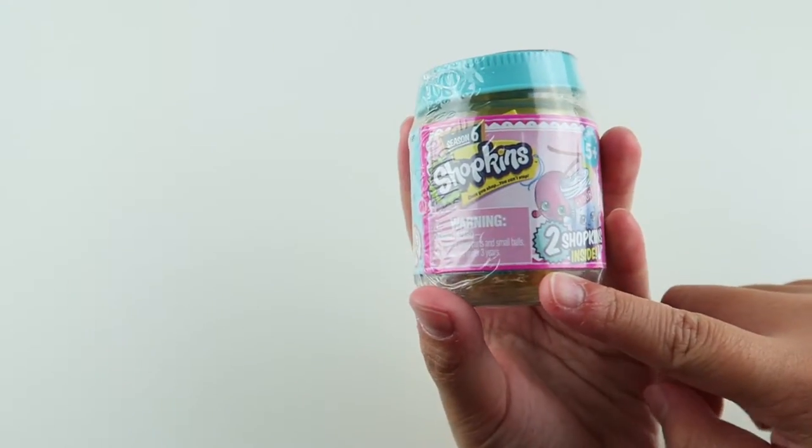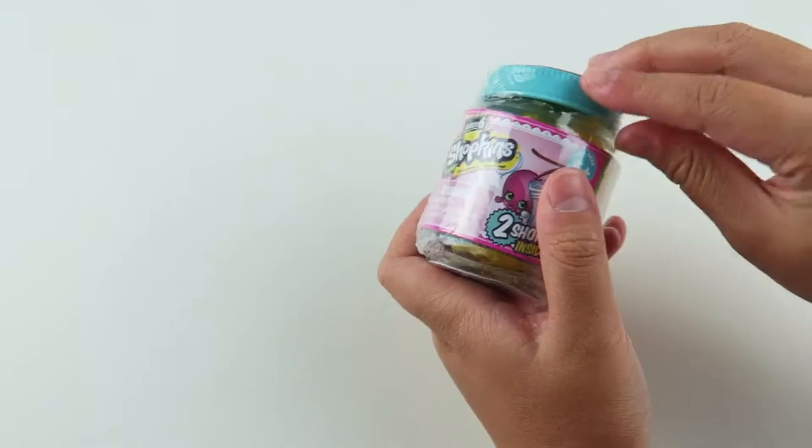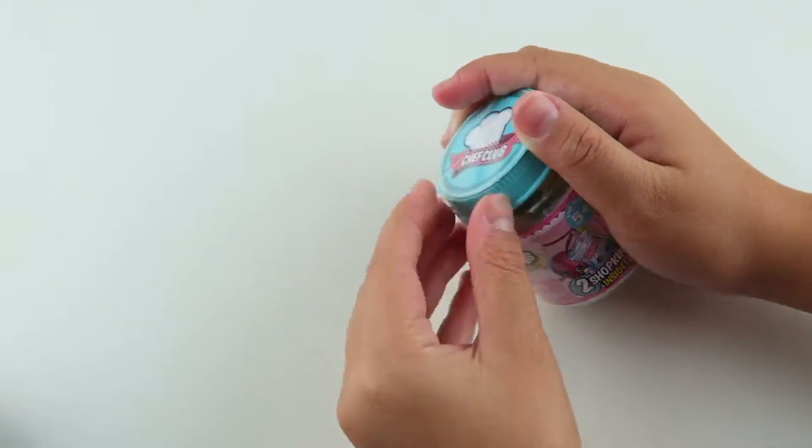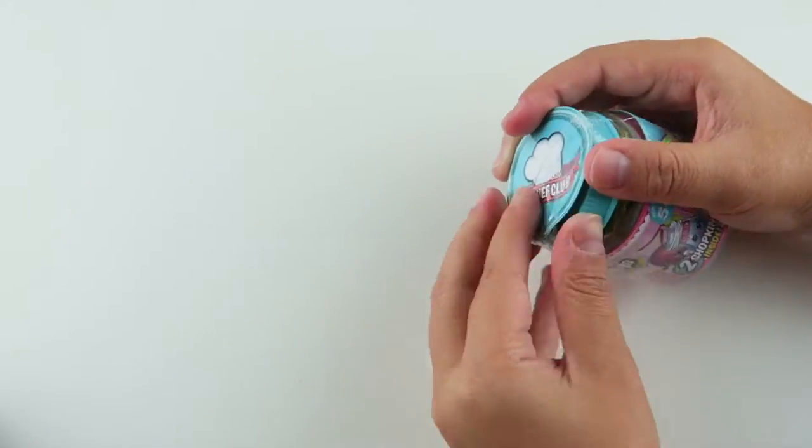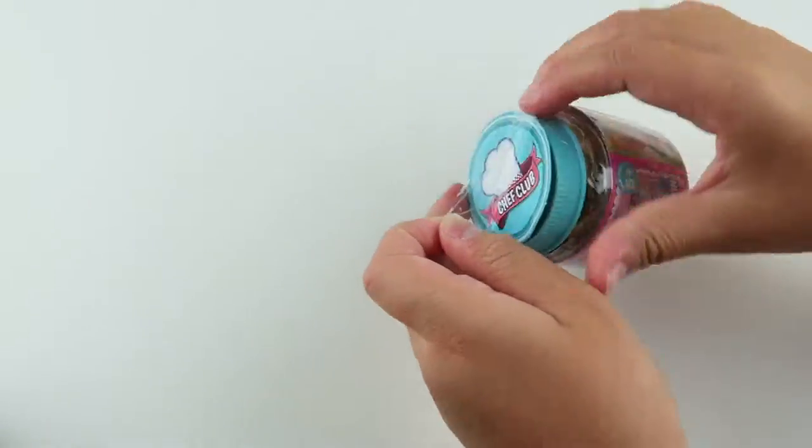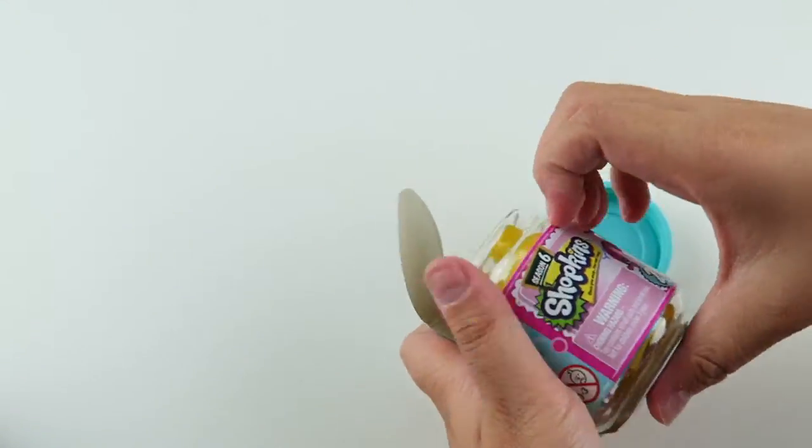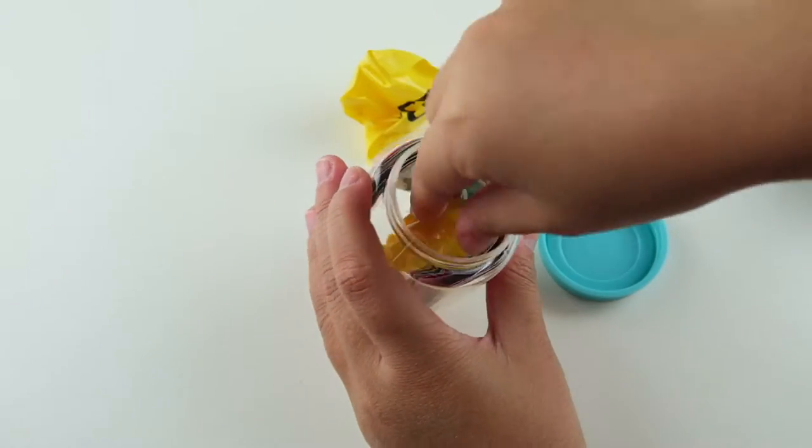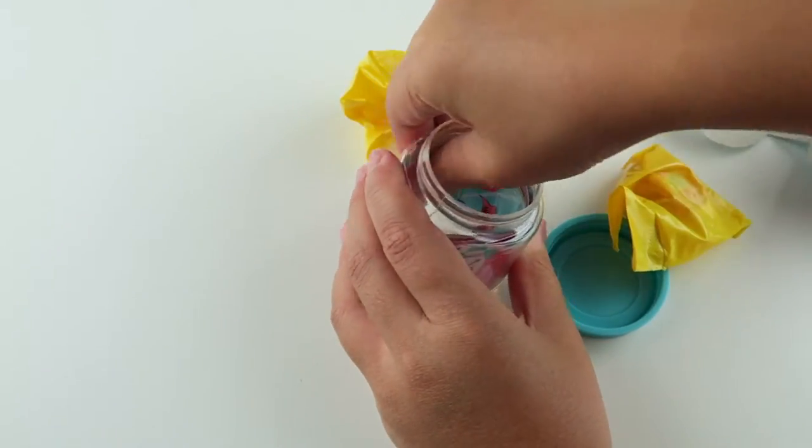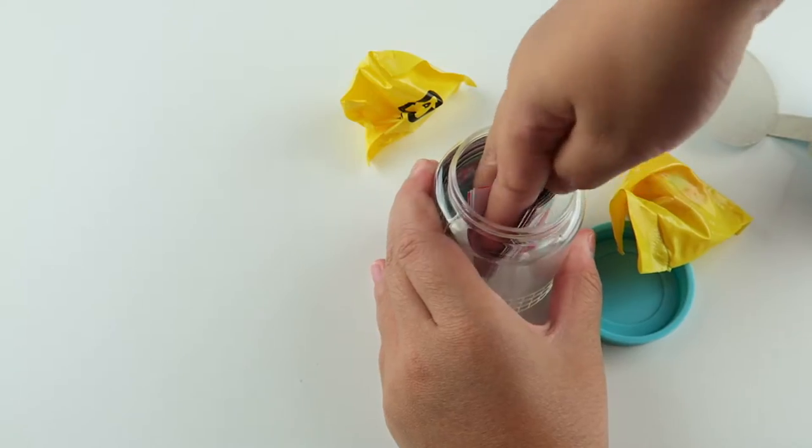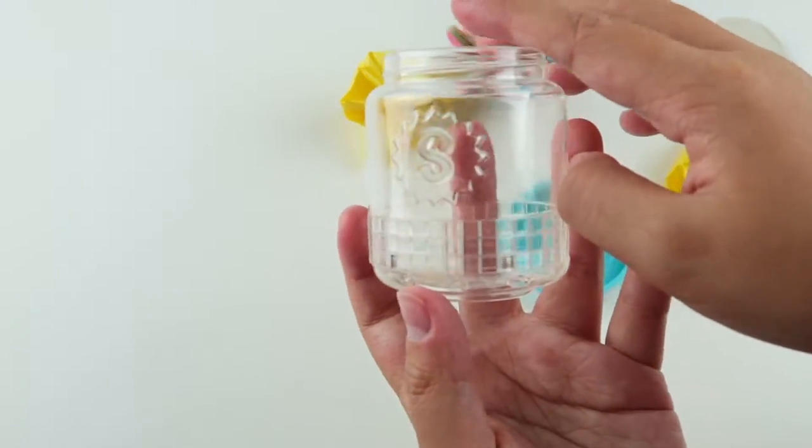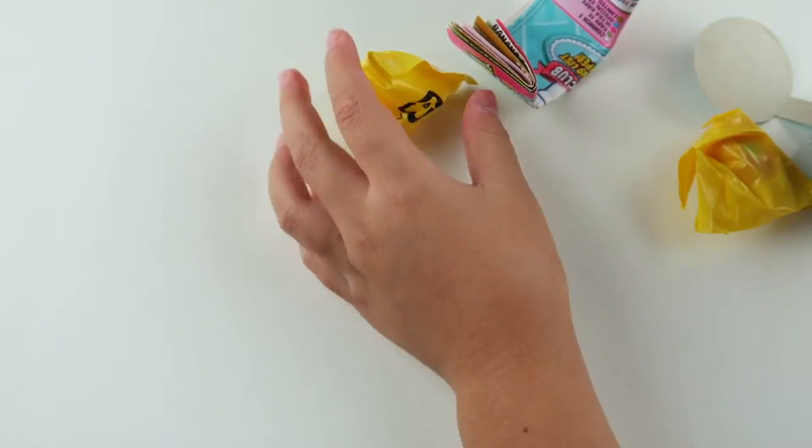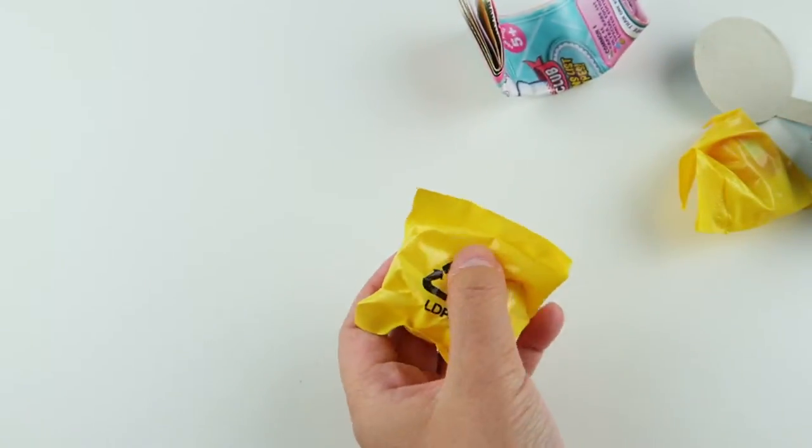So now I'm going to be opening up the Shopkins season six. So here's our blind bags and let's see who is inside. And these jars are super cute. I like how it's see-through and you can see your Shopkins inside. So let's open our first blind bag.